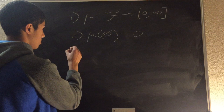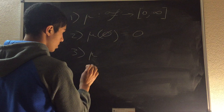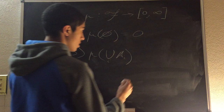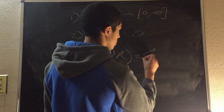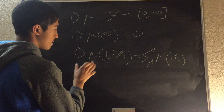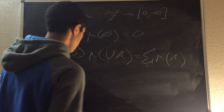The third property is countable additivity, or sigma-additivity, which says that if we take the measure of the union of multiple sets A_i, each of which are located in our sigma-algebra, then this expression must be equivalent to the sum over i of the measure of each A_i. In other words, the measure of the union of multiple intervals is equal to the sum of the measures of each interval.